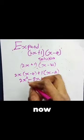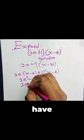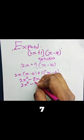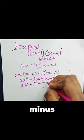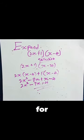Now from here we have 2x² minus 8x plus x, which is 7x minus 4, and this is simply our answer. Thank you for watching.